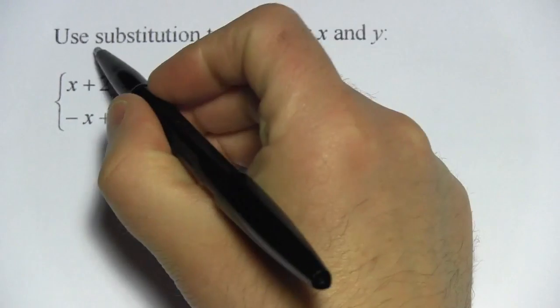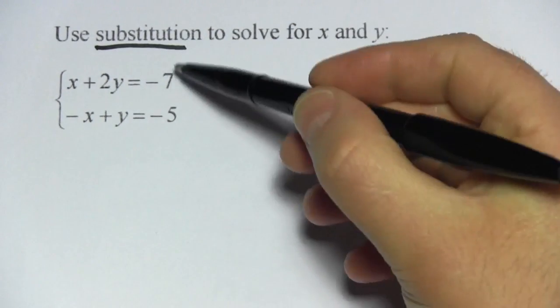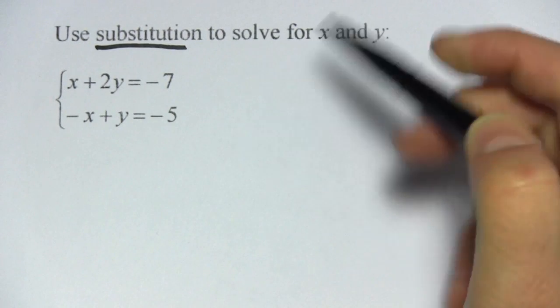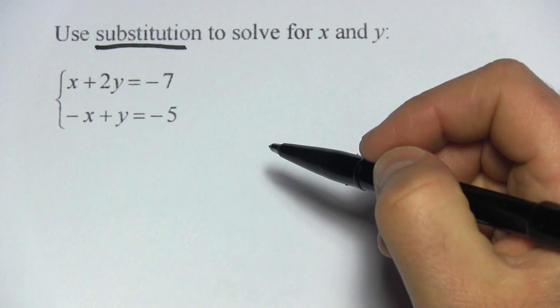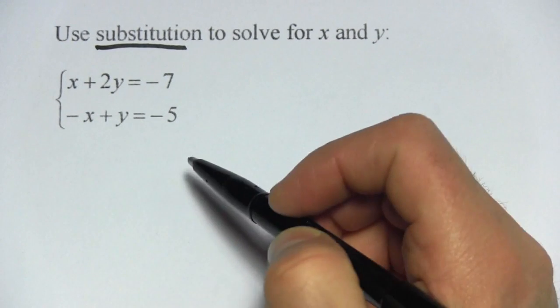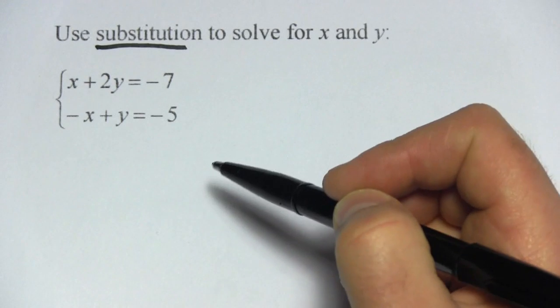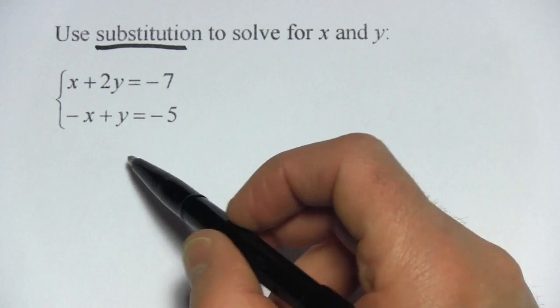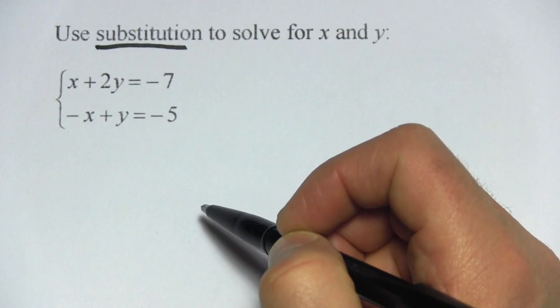In these problems, we're being asked to use the substitution method to solve a system of two equations. We have two equations, two variables, and we want to solve for both x and y. You may be familiar with doing this when one of the equations is already solved for one of the variables, but these aren't. So what do we do? Well it's pretty easy. We just pick one and solve for one of the variables.